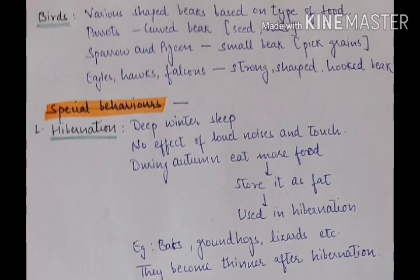Eagles, hawks aur falcons carnivores hain — iska matlab hai ki unka beak strong, sharp aur hooked hona chahiye. Hibernation — jab koi animal winters se bachne ke liye deep sleep mein chala jaata hai. Agar aap touch karein ya loud noise karein to koi fark nahi padta. Autumn mein animal bahut saara khana khaata hai aur body mein fat ke roop mein store kar leta hai, aur yahi fat use hibernation mein energy ke liye use hota hai. Examples: bats, groundhogs, lizards. Yeh animals thin ho jaate hain lekin fat, protein aur muscle content same rehta hai.